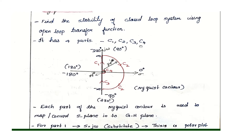The open loop transfer function G(s) is equal to K divided by s times (s plus 1). The denominator has an s term, meaning there is a pole at the origin.